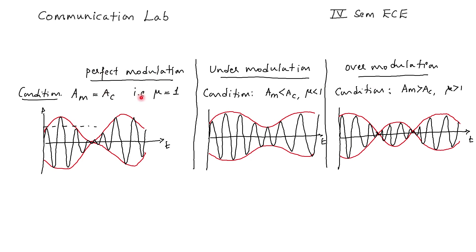Perfect modulation means the amplitude of the message signal is equal to the carrier amplitude, so the modulation index is 1, and the waveform looks accordingly. For under modulation, the amplitude of the message signal is less than the carrier amplitude, so the modulation index is less than 1, and the waveform looks different.